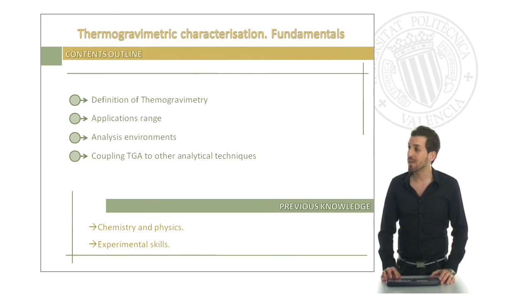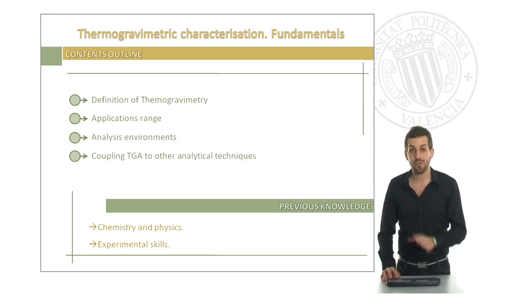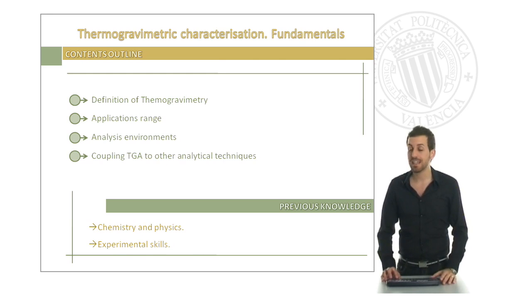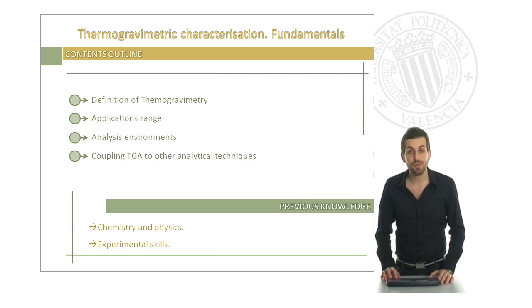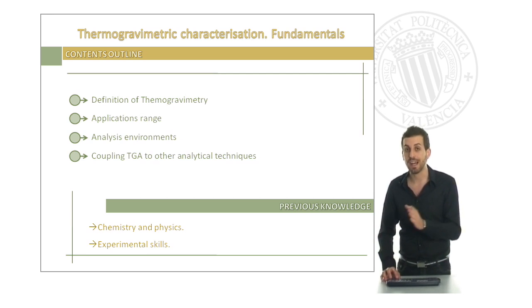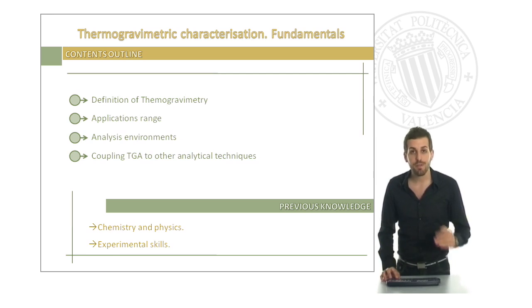Let's see the contents outline. First of all, we will define what is thermogravimetric analysis, and then we will see the application range that we can use for our experiments. Then, we will discuss different gases that can be used as an analysis environment, and finally, we will see some different analytical techniques that can be coupled to our TGA, thermogravimetric analyzer, in order to obtain deeper and better results.